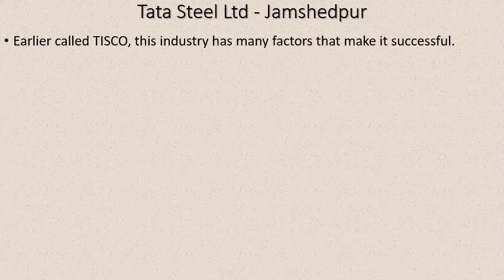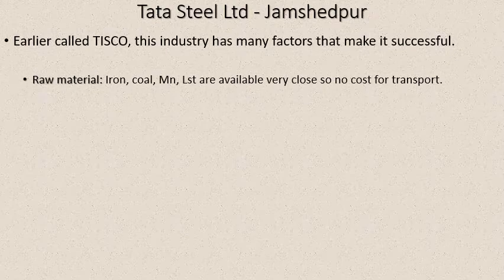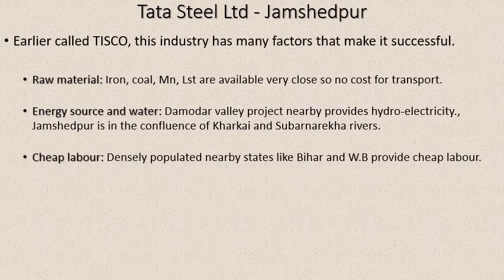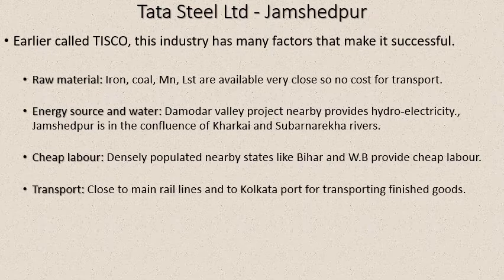Tata Steel, earlier called Tisco, had many factors that made it successful. Iron, coal, manganese, and limestone are easily available nearby — so there's no transport cost. Energy source: Damodar Valley Project provides hydroelectricity. Water: Jamshedpur is at the confluence of the Kharkai and Subarnarekha rivers, giving abundant water. Cheap labor: nearby states Bihar and West Bengal are densely populated. Transport: close to the main rail lines of Kolkata port and the eastern railway track runs through Jamshedpur.